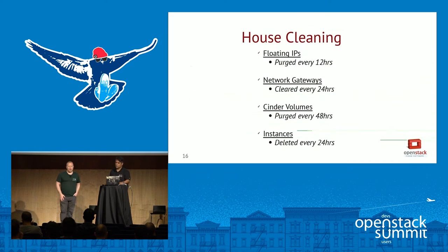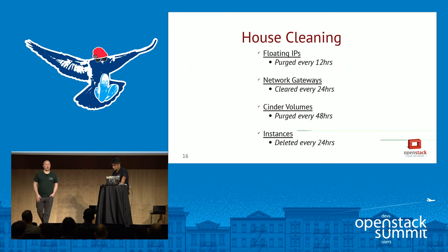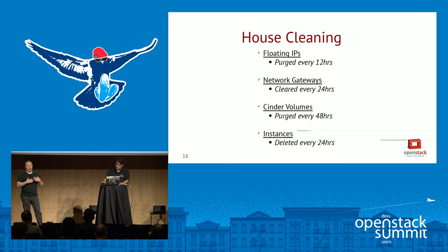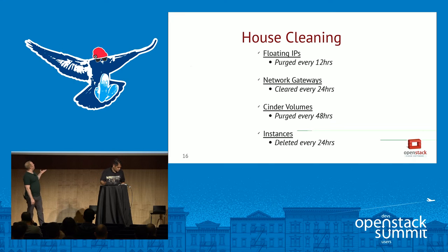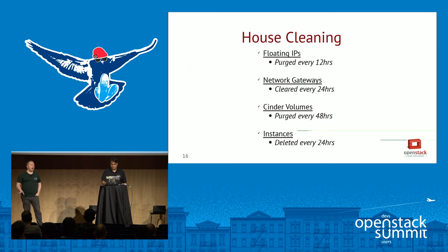There are four major areas where we do cleanup — custom tools written to rein in resources and ensure an optimal level of resources for new users. We pull floating IPs back every half day. Network gateways get cleared every day. Cinder volumes get deleted every 48 hours. And instances get deleted every day. We may revisit this retention rate, but right now this is the sweet spot that balances user demand versus capacity to serve the general public.